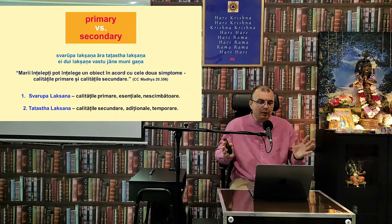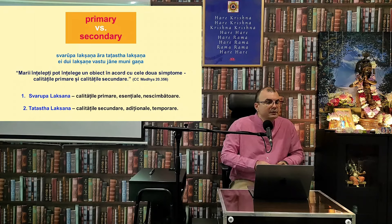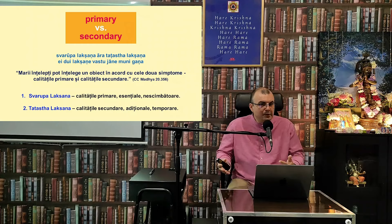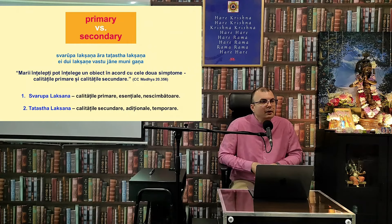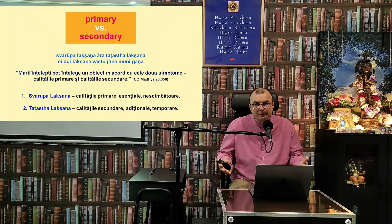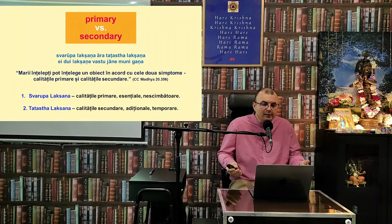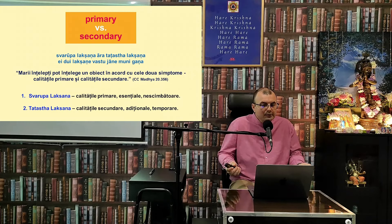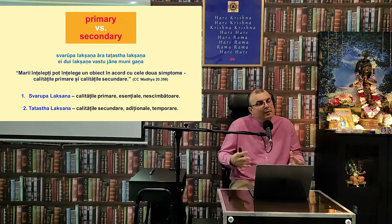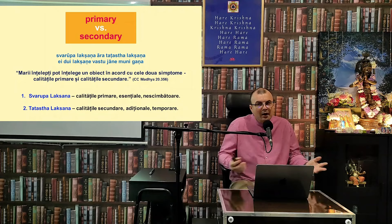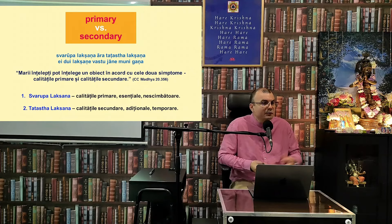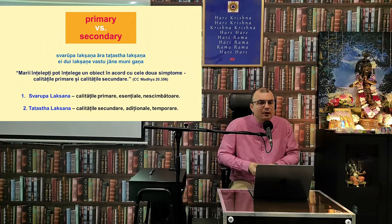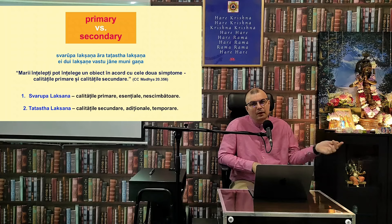Orice încercare de a pune jos personalitățile spirituale din cauza invidiei dă peste cap toată practica spirituală. Maestrul spiritual are și calități secundare, Tatasta Lakshana — cum ar fi că poate fi un casnic cu copii sau un călugăr, un sannyasi. Poate să aibă doi discipoli sau o mie. Trăsăturile de caracter, astrогrama, vârsta — acestea sunt Tatasta Lakshana.